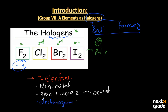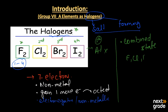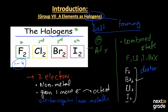Because they are electronegative, they have a non-metallic character and are always found in the combined state. This means they are not found as simple fluorine, chlorine, iodine, or bromine alone — they are always found as F2, Cl2, Br2, and I2. That is why they are called diatomic molecules; they are diatomic in nature.